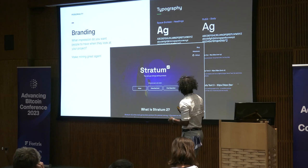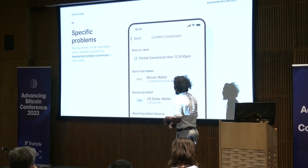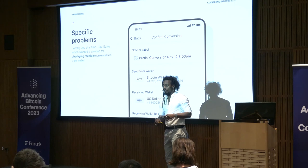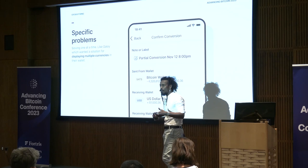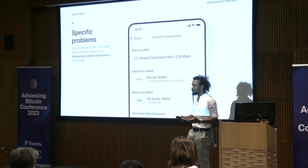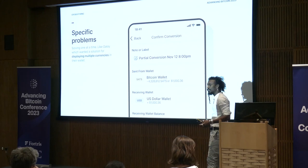Some projects have specific problems they want to solve. For example, Galoi wanted to look into an issue in displaying multiple currencies in their wallet. They were introducing something called stable sets, and asked: how do we represent multiple currencies within a single wallet that previously was just Bitcoin? So a bunch of people collaborated on that to resolve this problem.